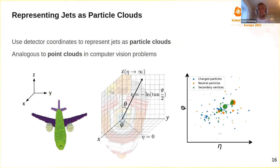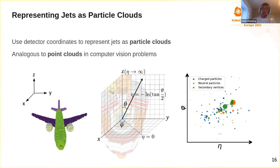Jets can be represented as particle clouds — the most natural representation — using detector coordinates eta and phi. A jet consists of charged, neutral particles and secondary vertices, which are interaction points for particles interacting in the collision shower. Representing particles this way is analogous to point clouds in computer vision, so we can borrow methods from computer vision to do calibration on this type of data structure.